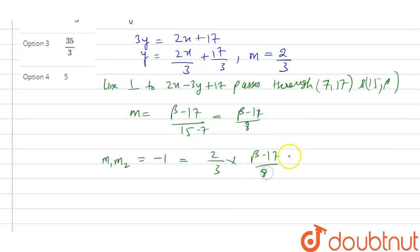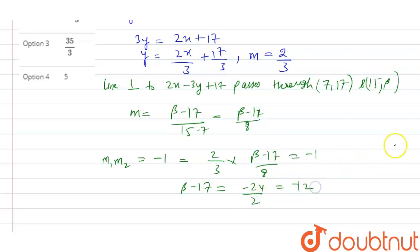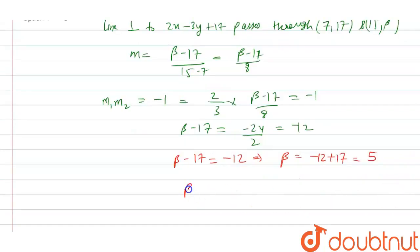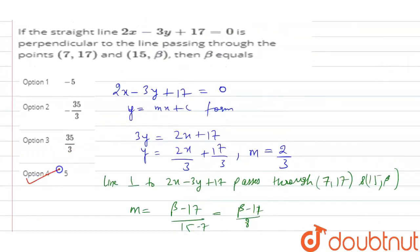After solving this, we get β - 17 = -12. So β = -12 + 17, that is 5. The value of β will be equal to 5. Our answer will be option 4, that is 5. Thank you.